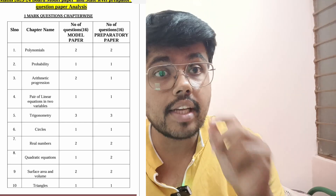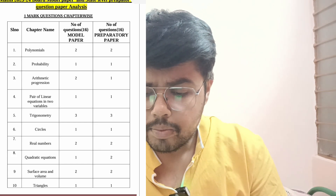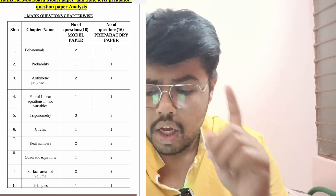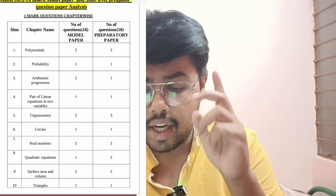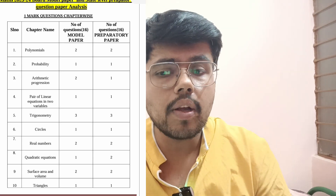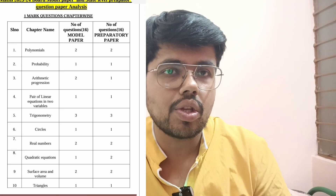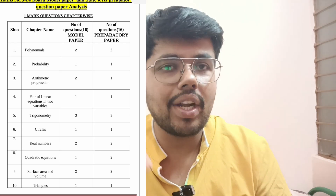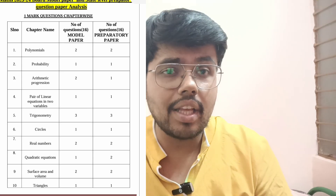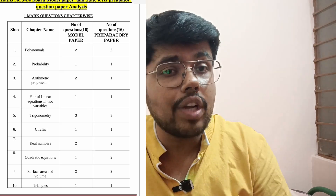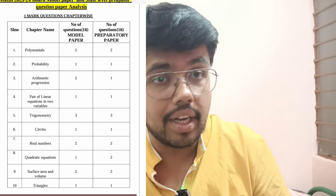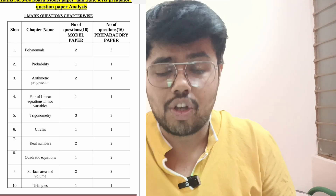Next, trigonometry — two to three marks. I have observed in both the model paper and preparatory paper: one mark and three marks each are distributed. In trigonometry, they ask about the value and trigonometric ratios concepts — what is sine, what is tan, what is the inverse of tan, what is the inverse of cosec, inverse of sine. One question will be based on the value table, and one more on whether you know how to analyze sine theta, cos theta, or tan theta. Please watch my one-markers video for details.